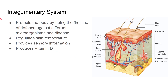So the first body system is the integumentary system. The integumentary system protects the body by being the first line of defense against different microorganisms and diseases. It regulates your skin temperature. So if you're feeling too hot, you'll start sweating and that's going to cool you off. And if you're feeling too cold,